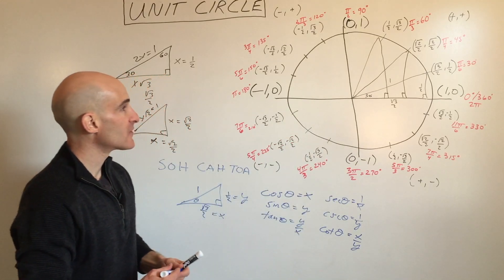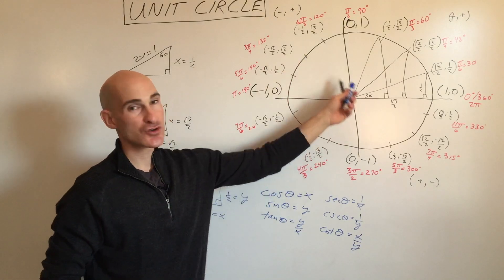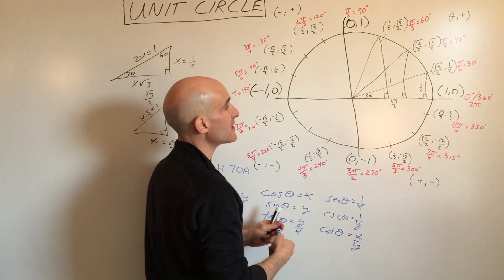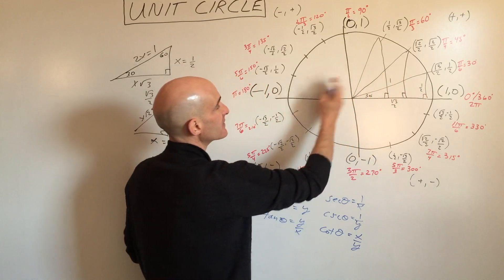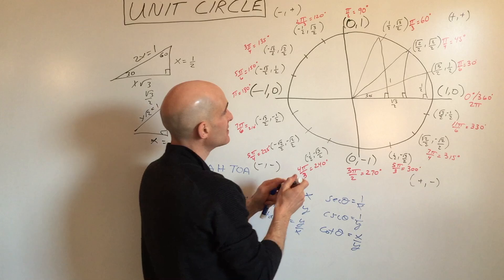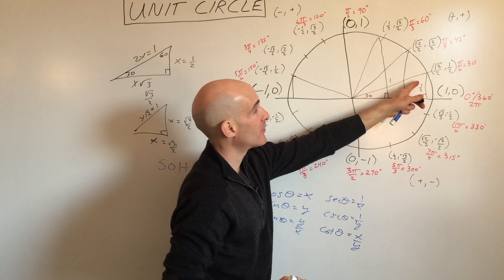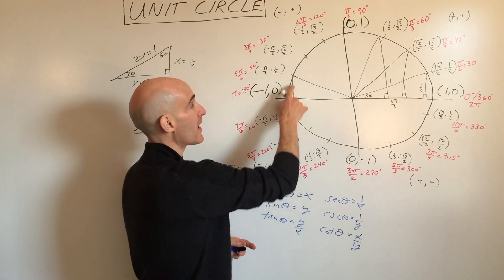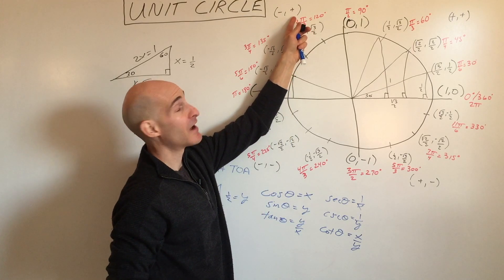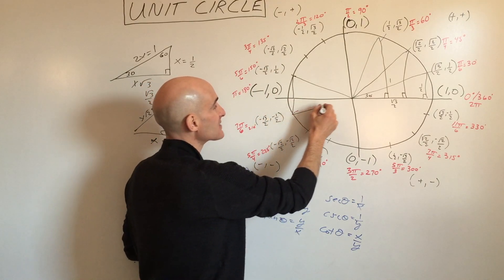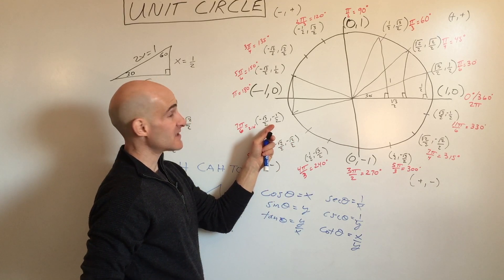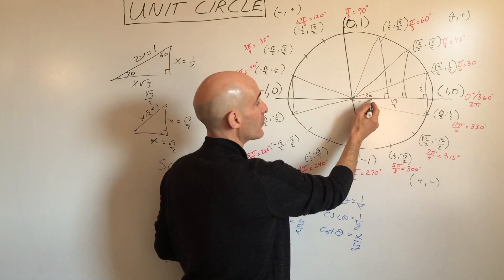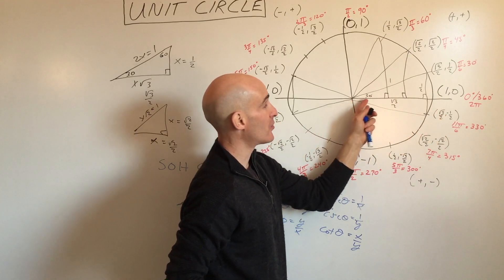Before working through examples, let's look at the symmetry of the unit circle. Take the 30-degree angle (π/6) in the first quadrant. If you reflect that triangle over the y-axis, you get a congruent triangle in the second quadrant — same coordinates, but x is now negative because you're going left. Reflecting over the x-axis into the third quadrant gives the same coordinates but both signs are negative. In the fourth quadrant, x is positive and y is negative.